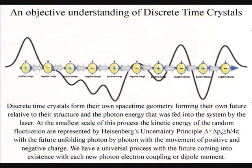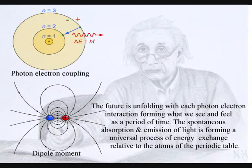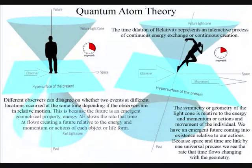We have a universal process with the future coming into existence with each new photon-electron coupling or dipole moment. The future is an emergent property unfolding relative to the energy and momentum of each object or individual. Discrete time crystals are just a distorted form of this process, forming sub-harmonic oscillations relative to their structure and the energy and momentum of the original laser.